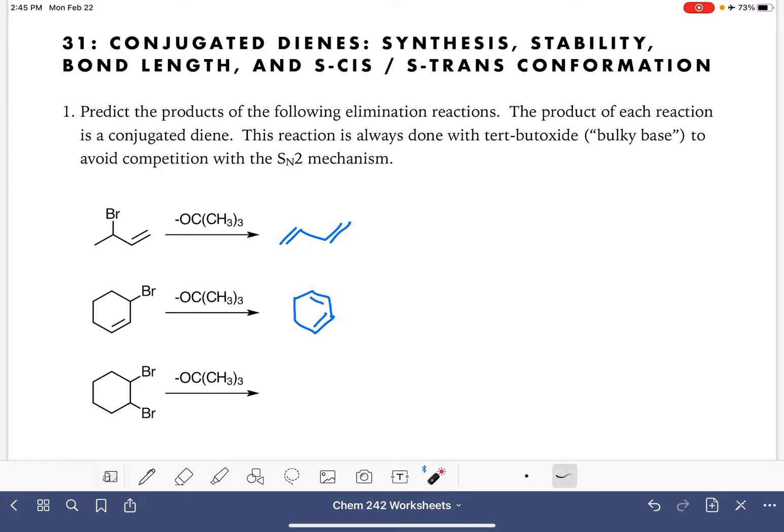Another option is to start with a dihalide with two halogens that are just strategically located. In this situation, they're side-by-side, they're vicinal, but they don't have to be vicinal. They just have to be in the right positions that a conjugated diene could come out of the reaction. You get the idea.